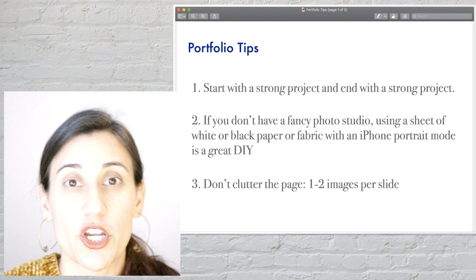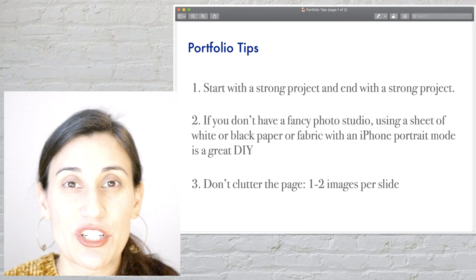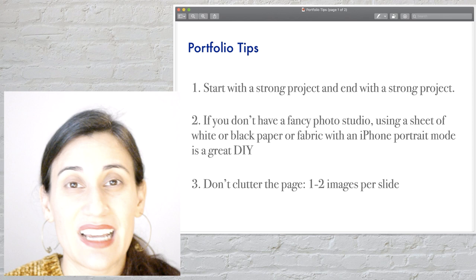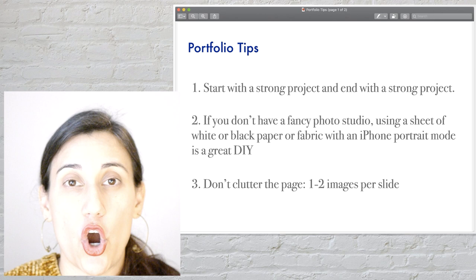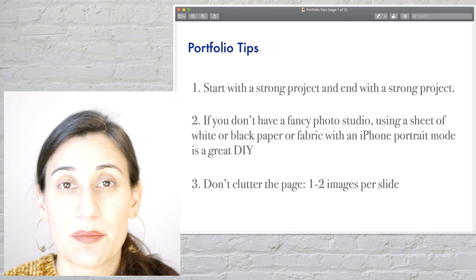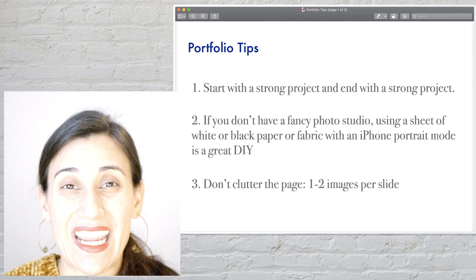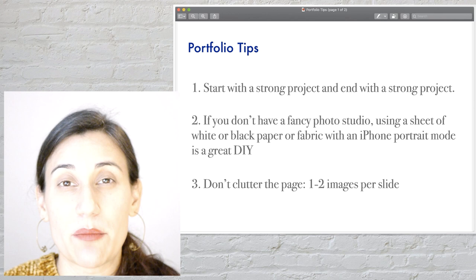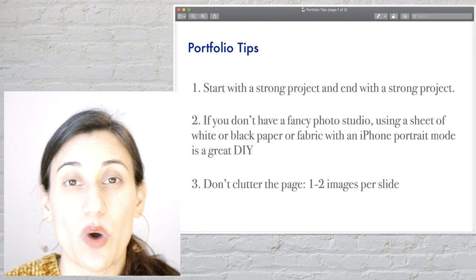Tip number two: when presenting images of models and things like that, you don't need a professional photography setup. You can do it DIY with just an iPhone in portrait mode, using an all-black or all-white sheet of paper to set up a background. Tip number three: don't clutter the page. Have about one to two images per page, maybe three at the maximum. Use a lot of white space and negative space so your images and your work really stand out — you don't want to make it hard on the viewer's eyes.